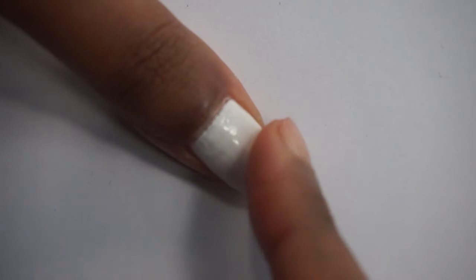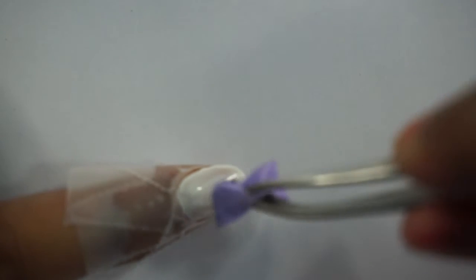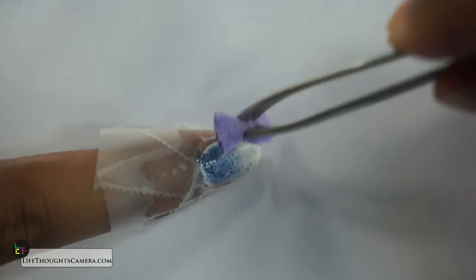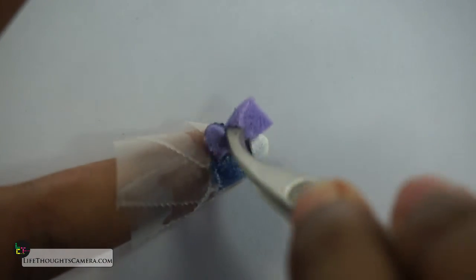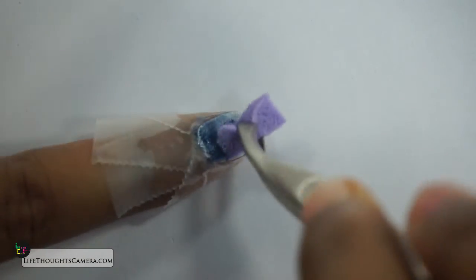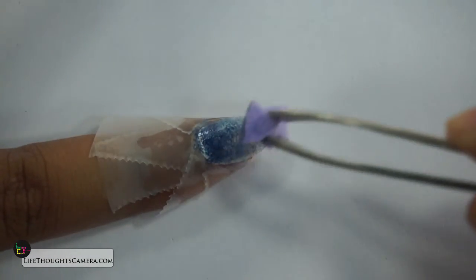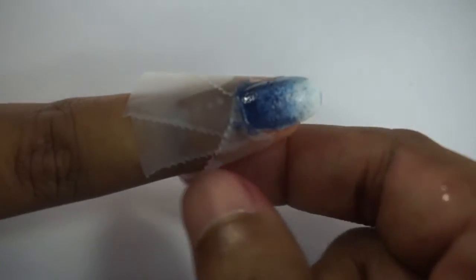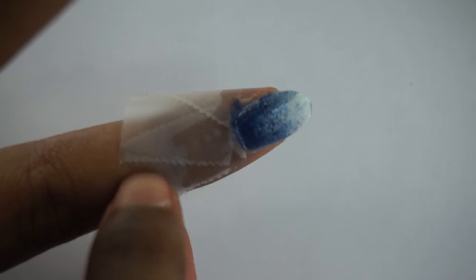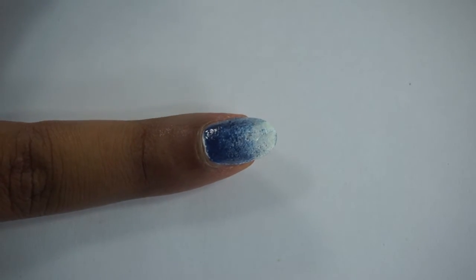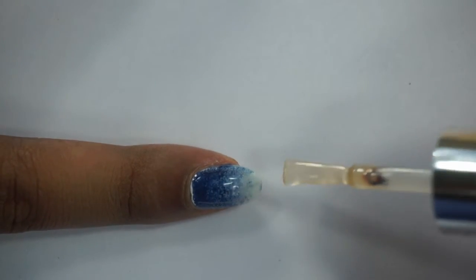Apply white nail polish and let it dry completely. Wrap the fingernail with tape to protect it. Create an ombre blue effect with the help of a sponge and two shades of blue, dark blue and a lighter shade. Remove the tape before the nail polish dries and apply a quick dry topcoat.